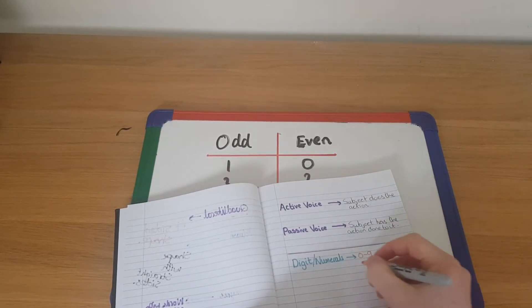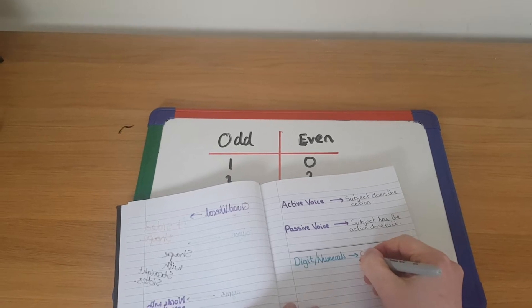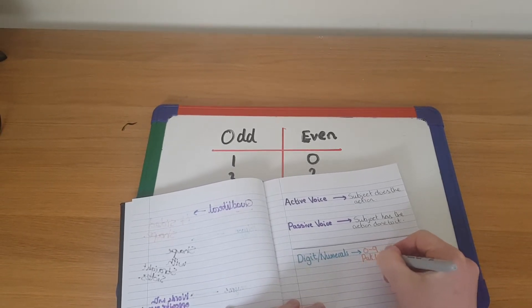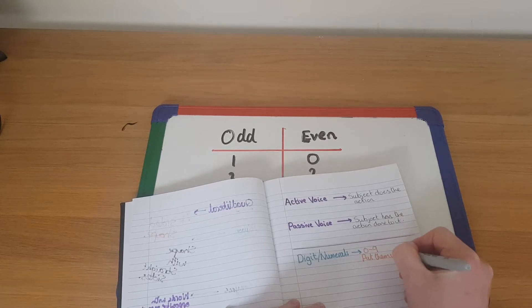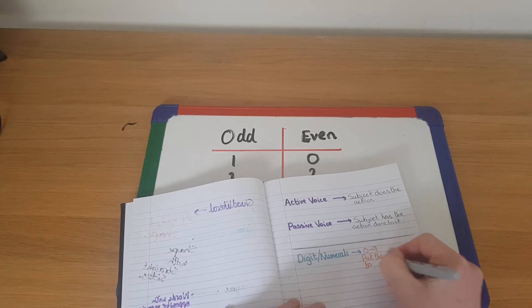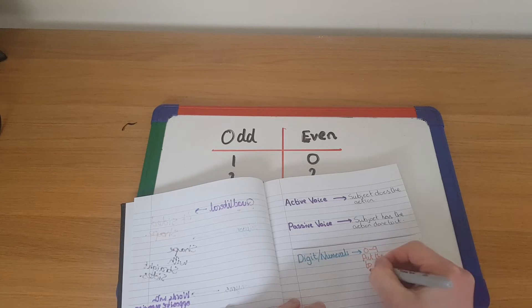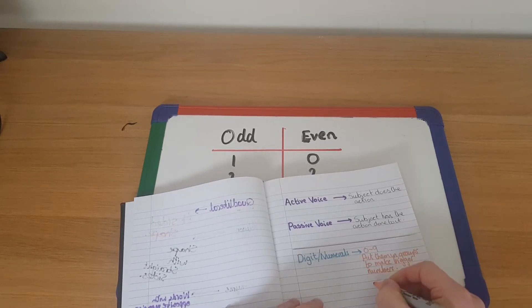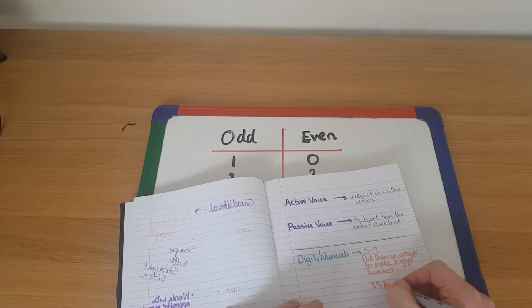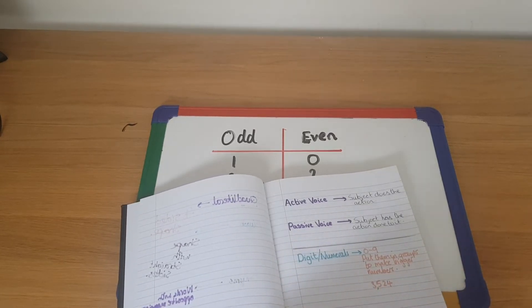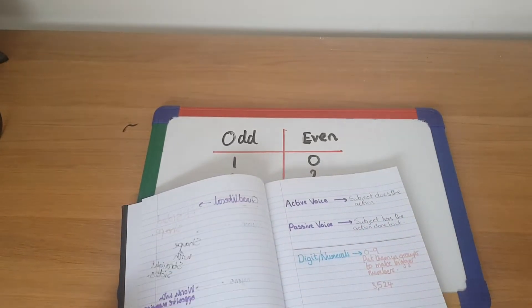And then together, we can put them in groups in some sort of different orders. So put them in groups to then make bigger numbers. So I might put an example there. Bigger numbers. Three, five, two, and four. So 3,524. So I've got to remember to use that sort of language today.